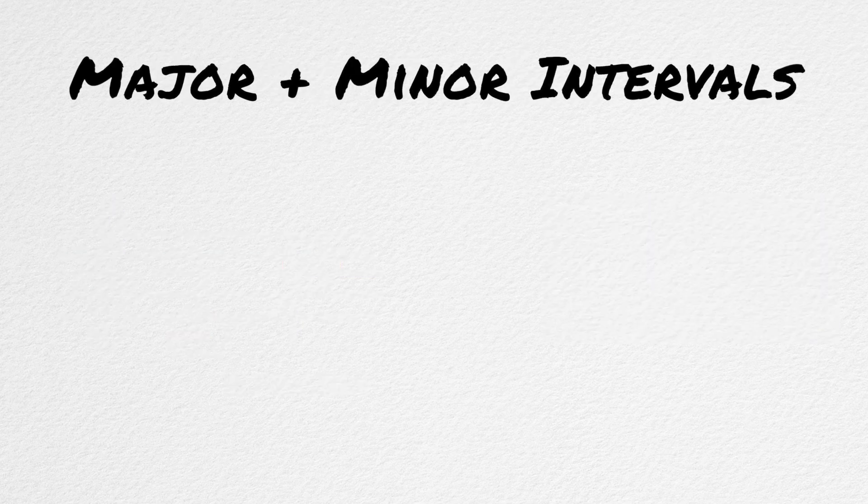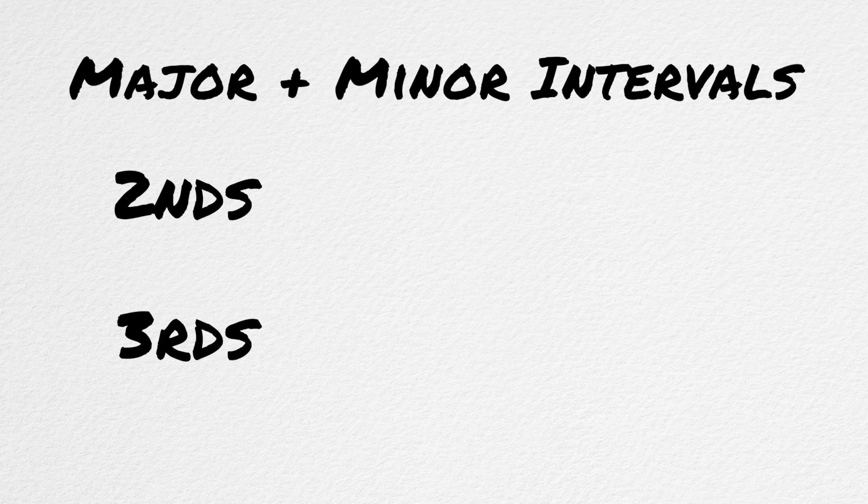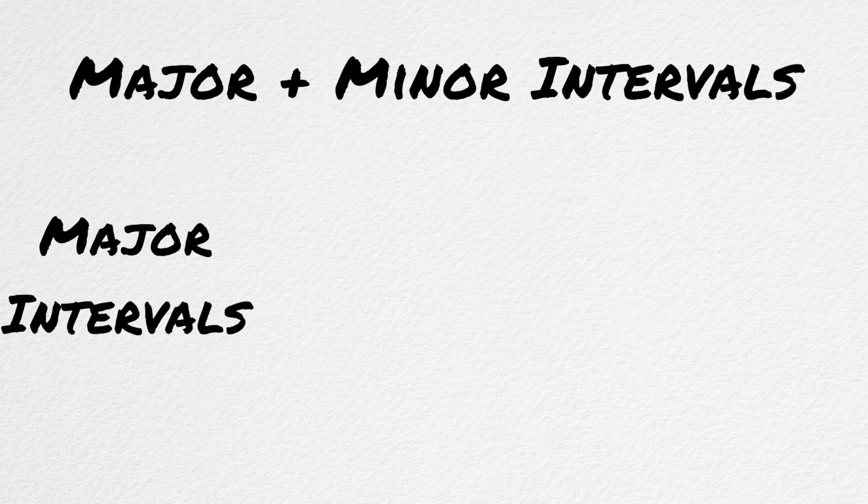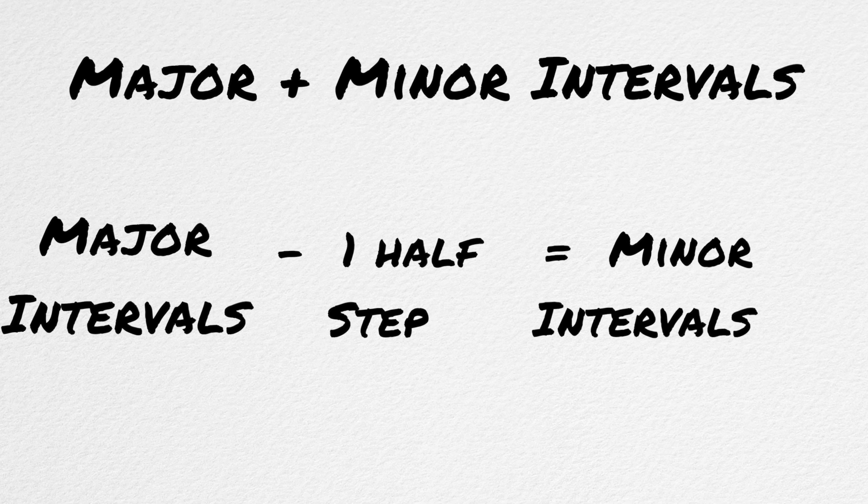The next kind of intervals are major and minor. Seconds, thirds, sixths, and sevenths can all be major or minor. As a general rule, minor intervals are 1 half-step smaller than the major intervals.